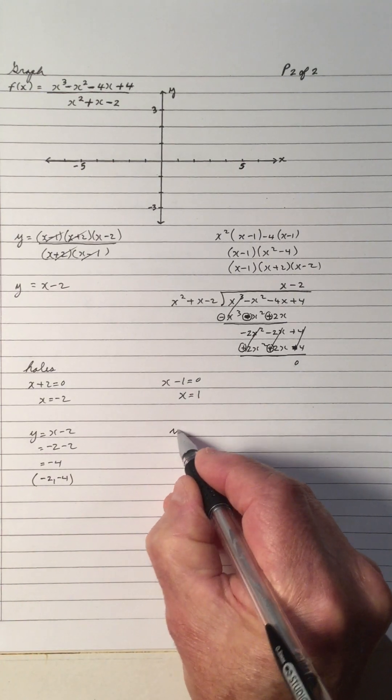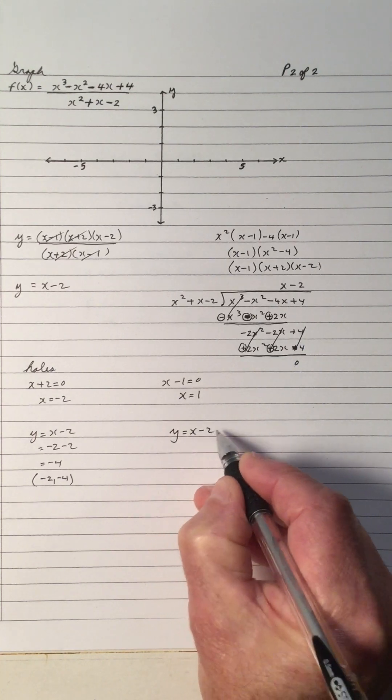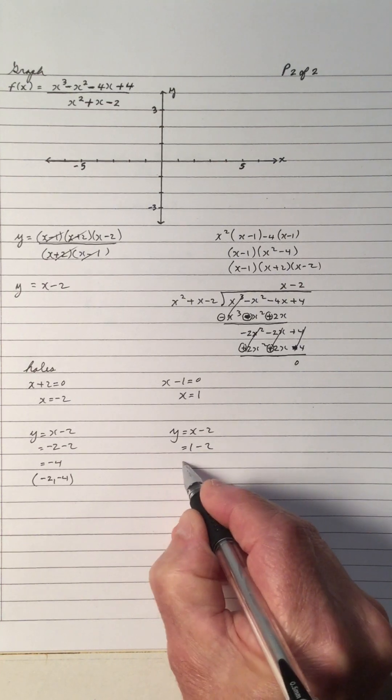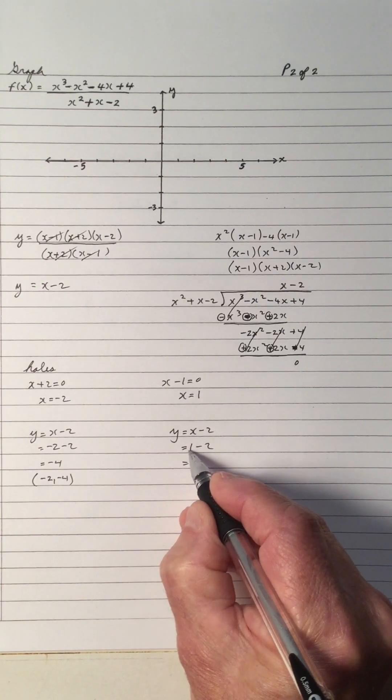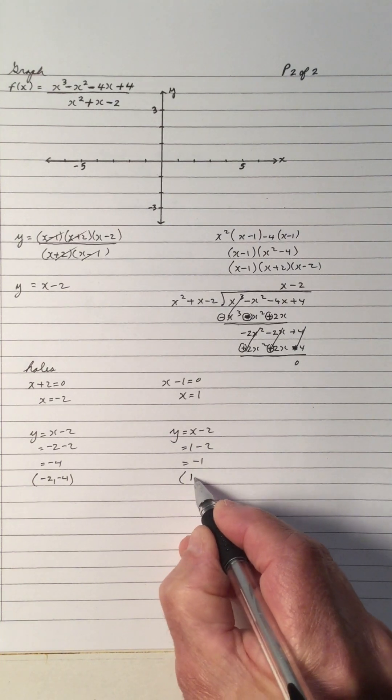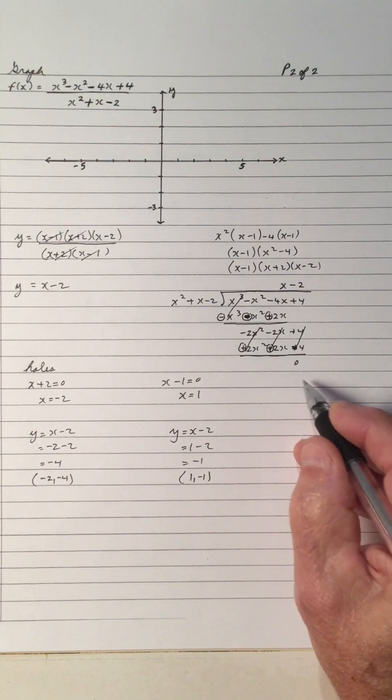And y equals x minus 2 is the line, and we plug in x is 1. And x is 1, 1 minus 2 is negative 1. And there's a hole at 1, negative 1.